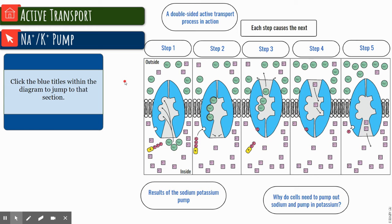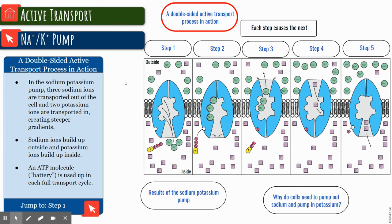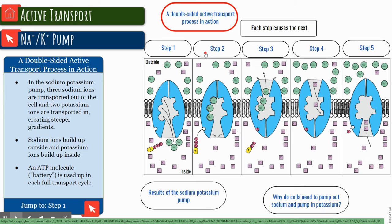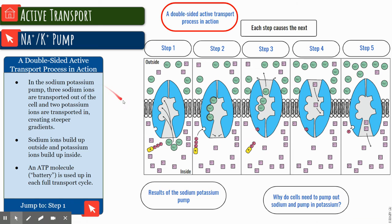Now we're going to talk about the sodium potassium pump, which is a really important one. We have a double-sided active transport process. On one side you're going to be pumping sodium to one side and potassium to the other, hence that's what we call the sodium potassium pump. We have a ratio of three sodiums to two potassiums.